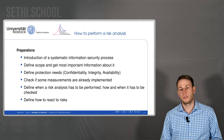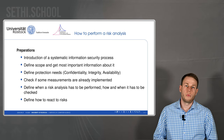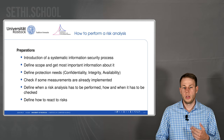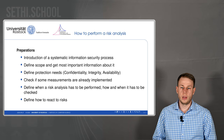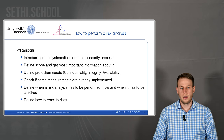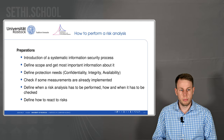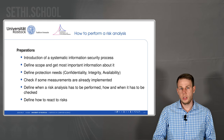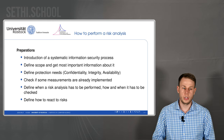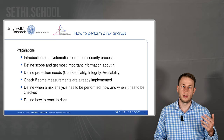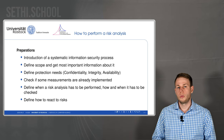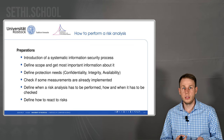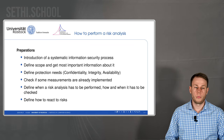Coming back to performing the risk analysis — we first need to do some preparational steps. We need to introduce a systematic information security process, define a scope and gather the most information about it, and define protection needs: what do we need to protect? Do we need to protect confidentiality, integrity, or is availability the most important thing? We have to define that.